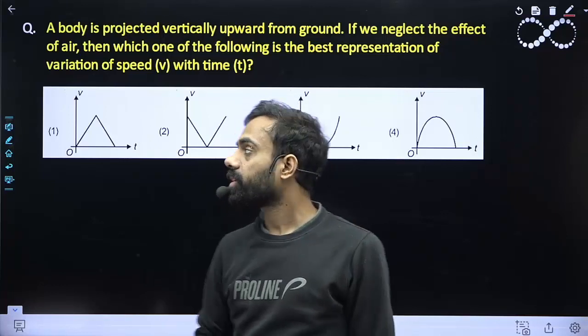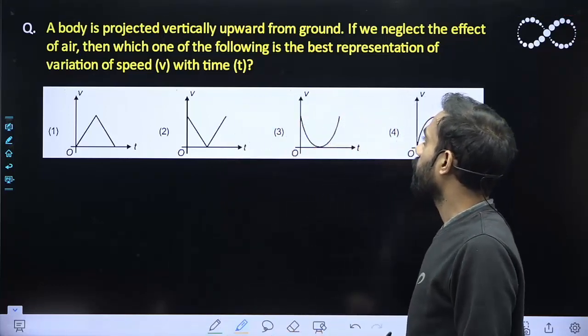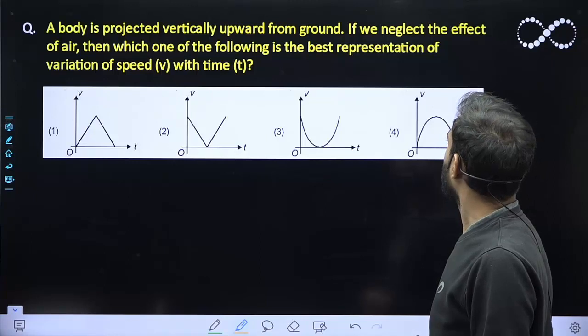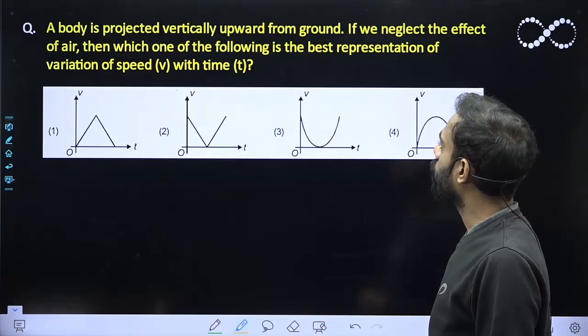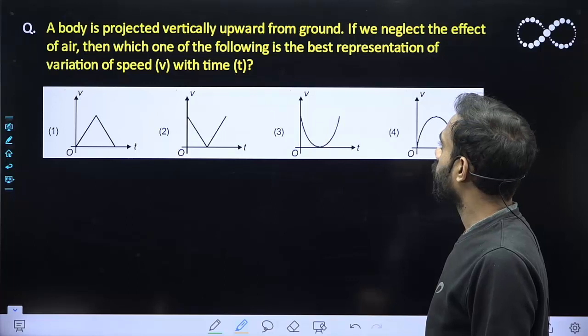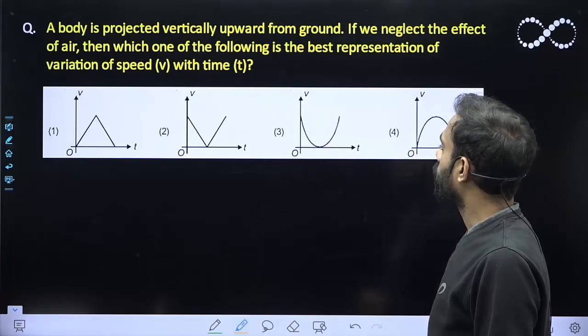Hello students! Let us see this question here. A ball is projected vertically upward from ground. If we neglect the effect of air, then which one of the following is the best representation of variation of speed with time?